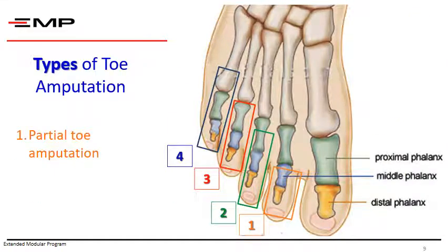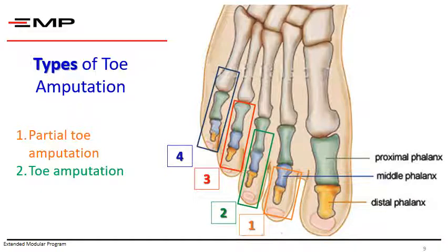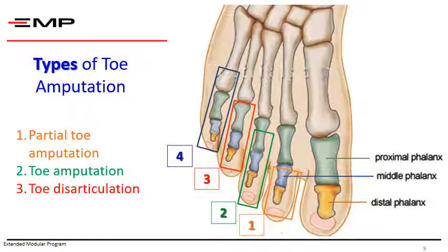Types of toe amputations. You can recognize four types based on the extent of amputation: partial toe amputation — removal of the middle and distal phalanx; complete toe amputation — including the proximal phalanx, ideally sparing its base; disarticulation — any amputation done through the joint; and ray amputation — which includes removal of the head of the metatarsal bone as well.